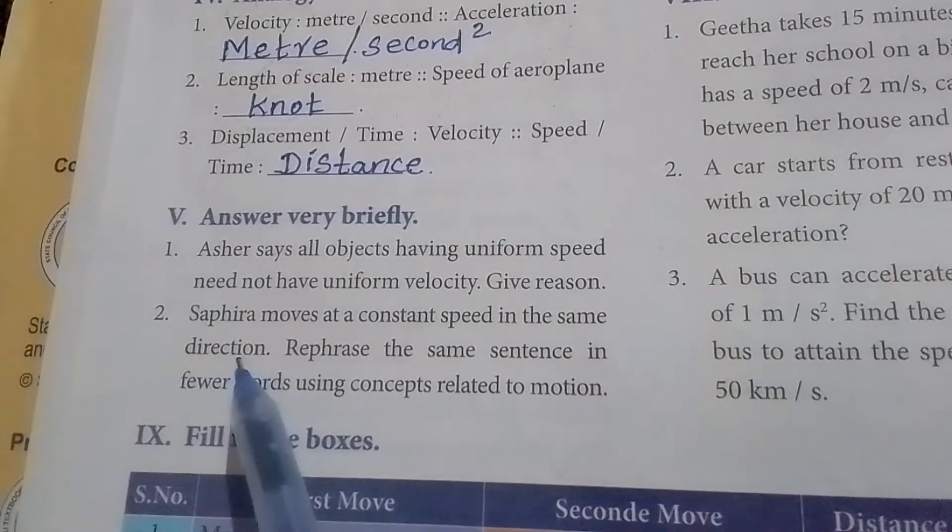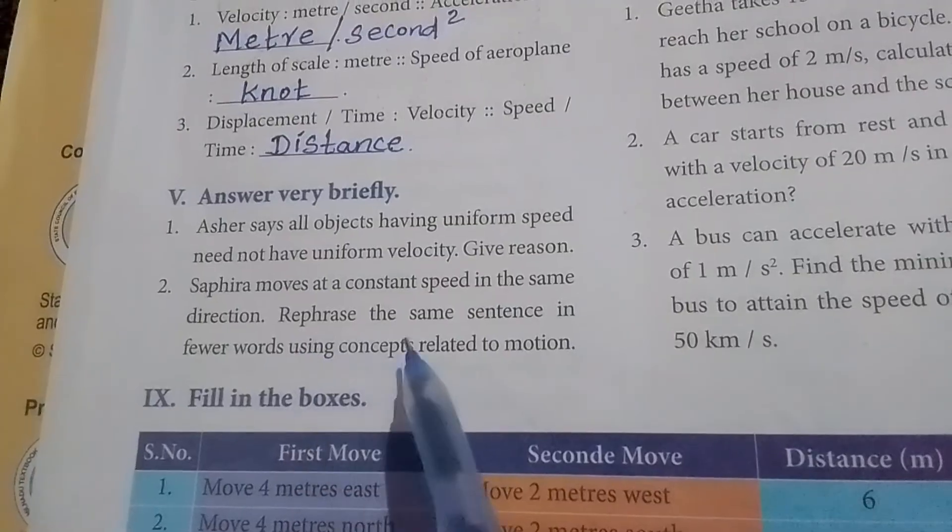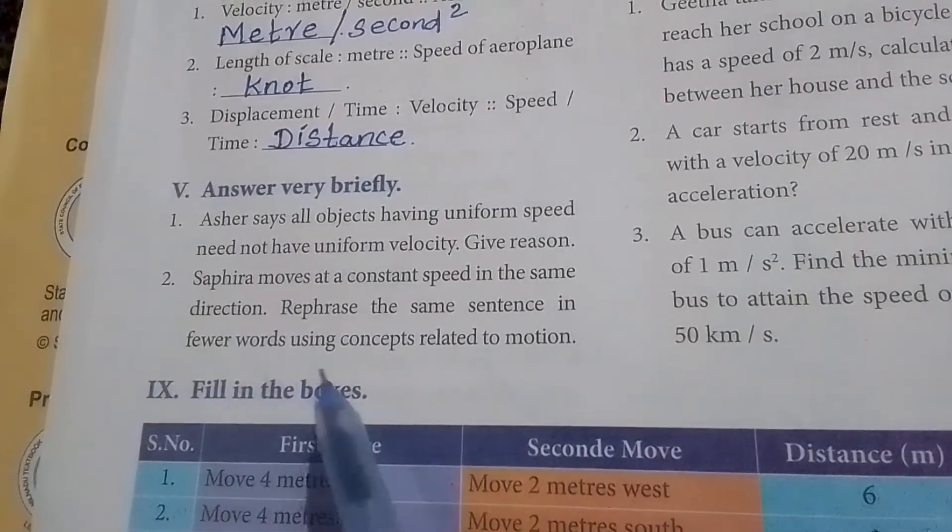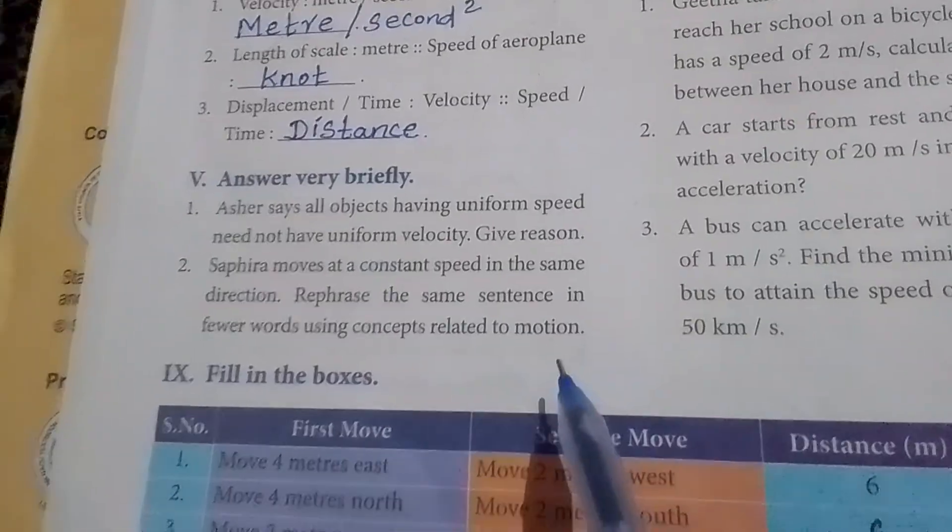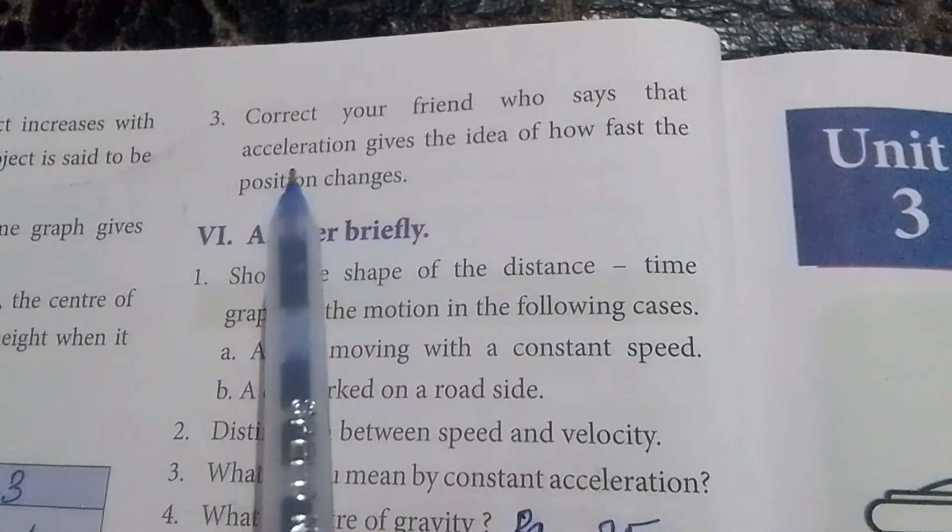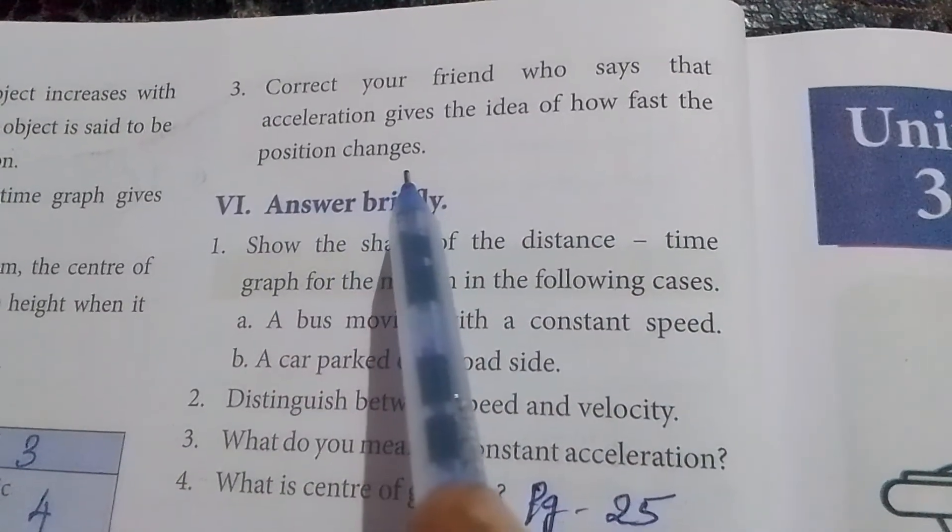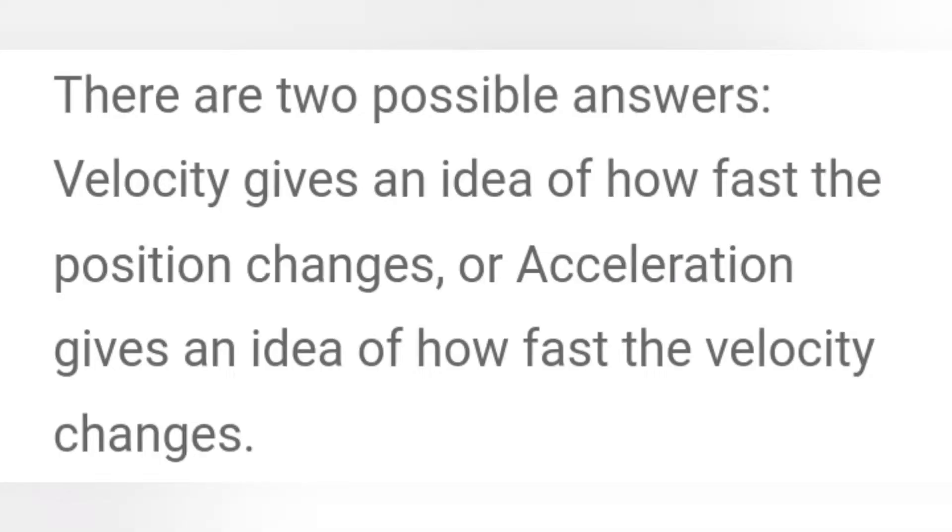Second question: Sabira moves at a constant speed in the same direction. Rephrase the same sentence in fewer words using concept related to motion. Answer: She moves in a straight line with constant velocity. Third question: Correct your friend who says that acceleration gives the idea of how fast the position changes. There are two possible answers: Velocity gives an idea of how fast the position changes, or acceleration gives an idea of how fast the velocity changes.